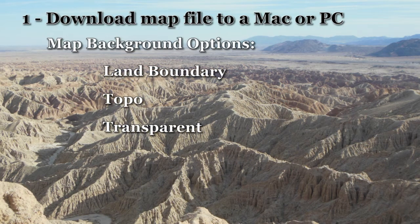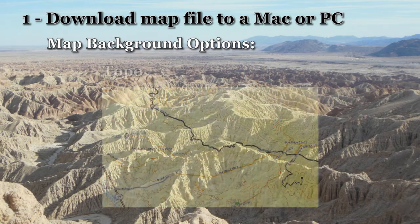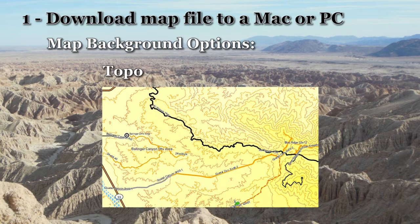There are three map backgrounds to choose from when you download. The land boundary map uses the background color to indicate the managing agency or public land type. The topo map is provided in high and lower resolution.